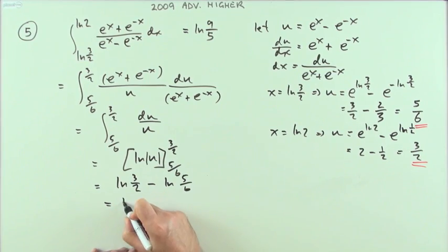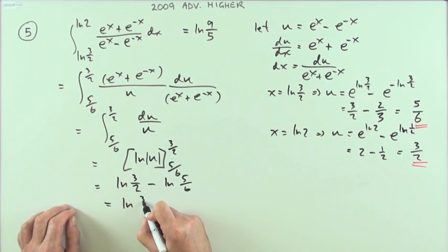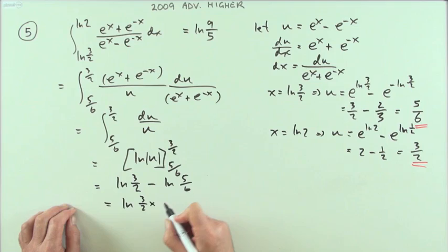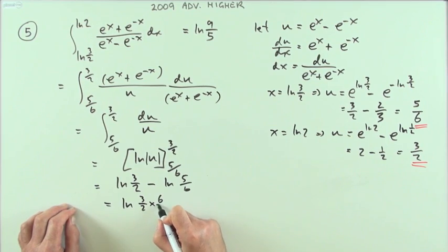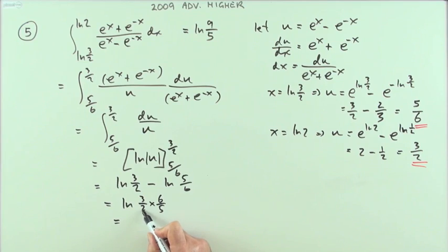If you're subtracting logarithms, you divide the values they're operating on. So that will be 3/2 divided by that, so it'll be the same as multiplied by the reciprocal, so it'll be times 6/5. 2 into 6 goes 3, 3x3 are 9, and there as required you've got 9/5.